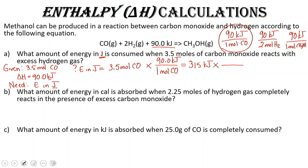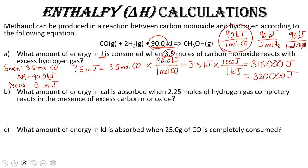However, the question asks for our value in joules, so since one kilojoule is 1000 joules, we get 315,000 joules. We need to express this to two significant figures, so that would be 320,000 joules, or written in scientific notation: 3.2 × 10⁵ joules.